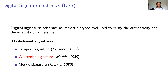According to how the security of digital signature schemes is handled, we distinguish several types. In this talk, we restrict ourselves to hash-based signatures, whose security is based on the properties of cryptographic hash functions. Examples of hash-based signatures include the Lamport signature, the Winternitz signature, and the SPHINCS signature.